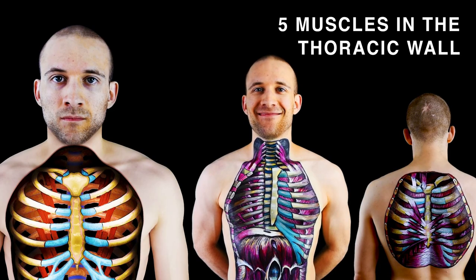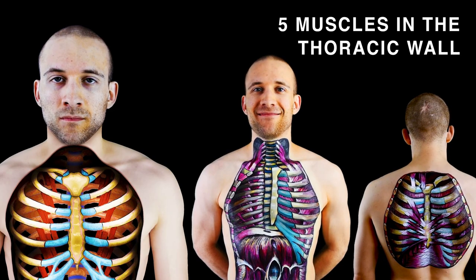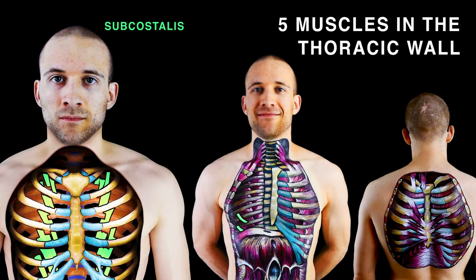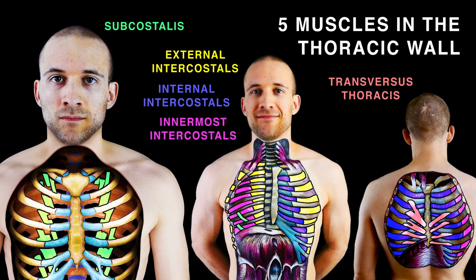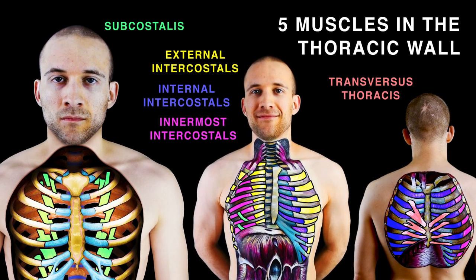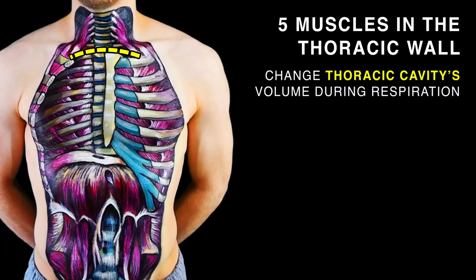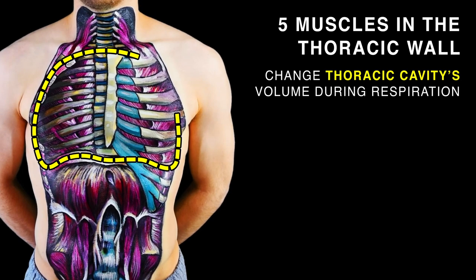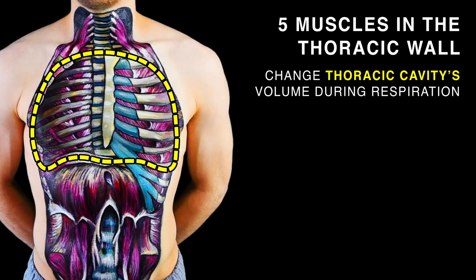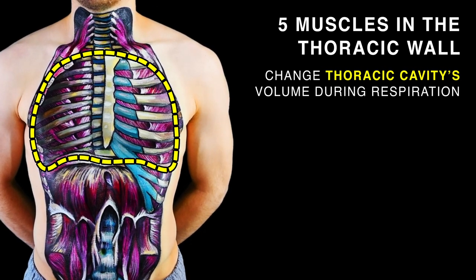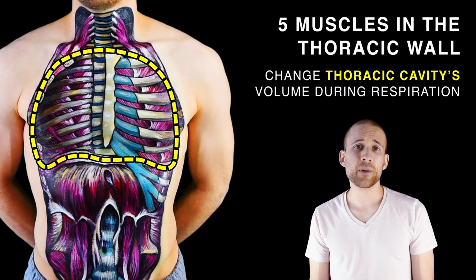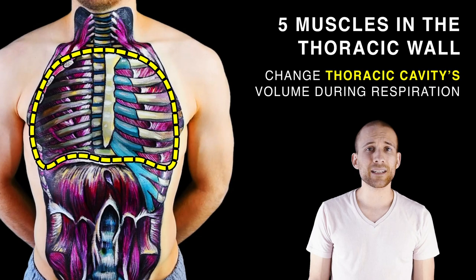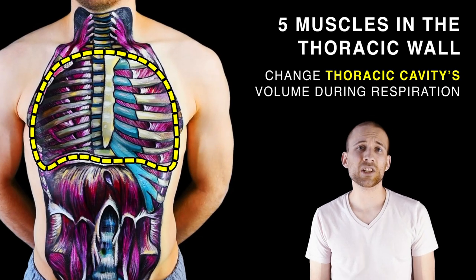Muscles in the thoracic wall are subcostalis, three intercostal muscles, and transversus thoracis. They change the thoracic cavity's volume during respiration. Now let's subject these muscles to examination.